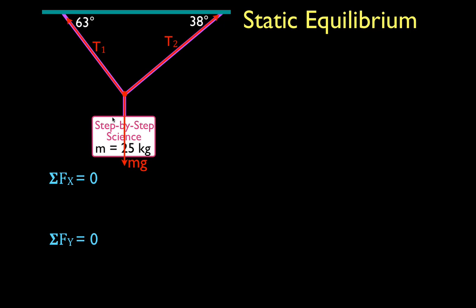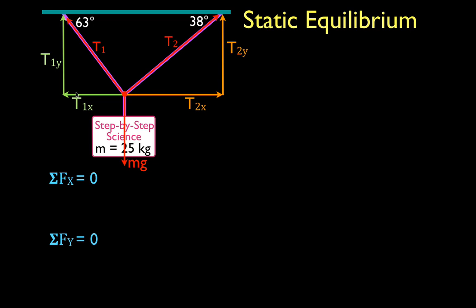We want to be able to sum up the forces in the x and the y-direction. You'll notice mg really acts only in the y-direction. T1 and T2, the other two tension forces, are acting somewhere between the x and the y-axis. That tells us we're going to have to break T1 and T2 down into their component forces — their x and their y-components. We'll draw T1x and T1y, and the x and y-components of T2. Using alternate interior angles for these parallel surfaces, if this angle is 63 degrees, then this angle here must also be 63 degrees, and if this angle is 38 degrees, then this angle here must also be 38 degrees.